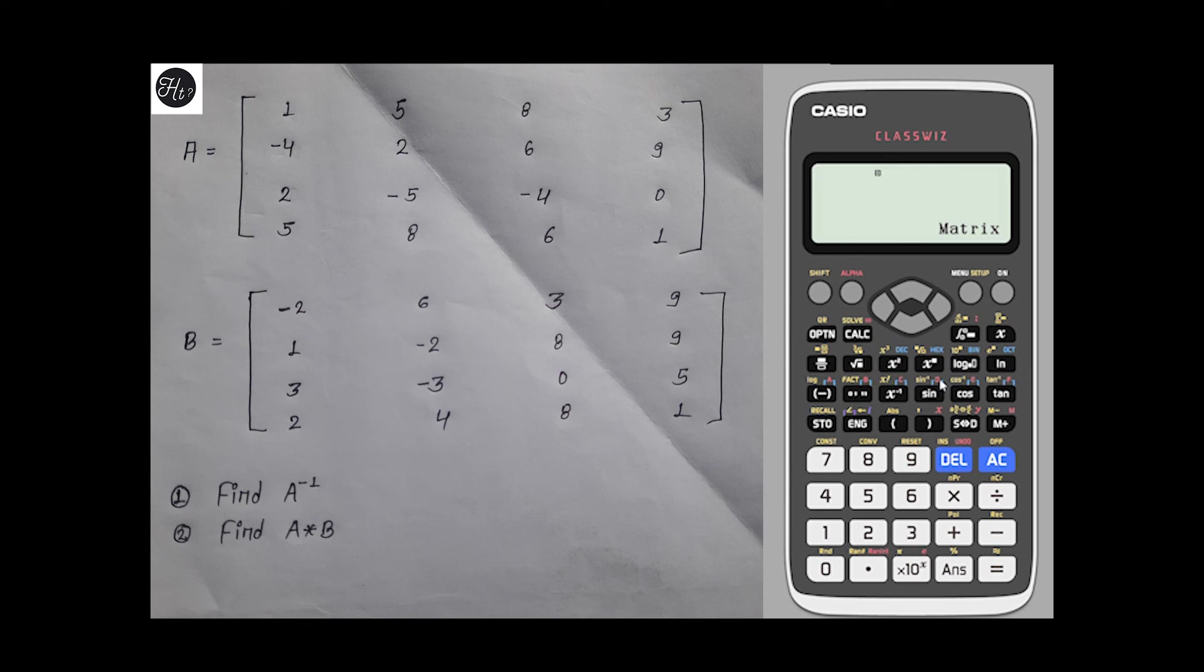Similarly, let's find the multiplication of matrix A and B. For that, again select option. Matrix A is 3 and matrix B is 4. So first select 3, then multiply, and again option.